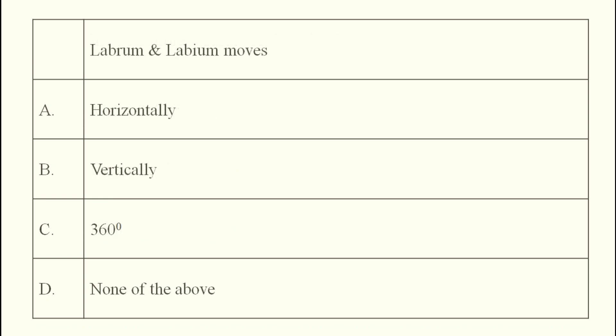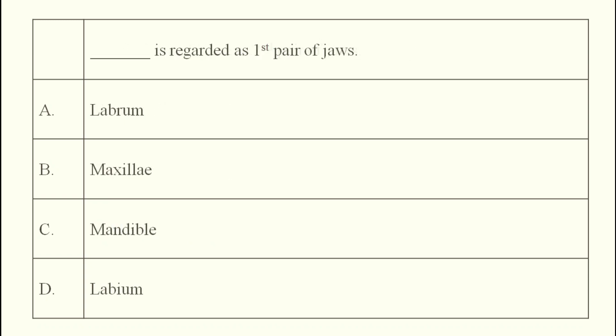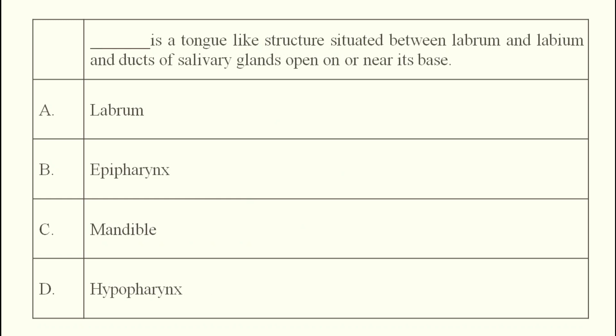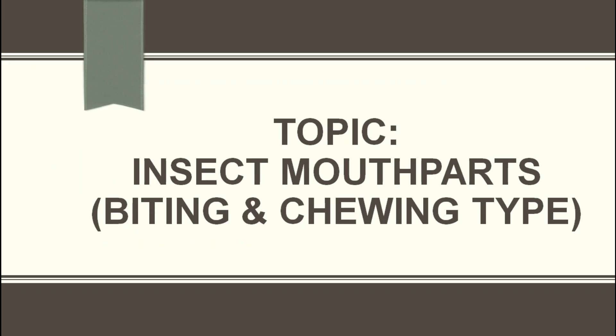These are the basic things. That is why I am not telling. Again Order Odonata, that is your dragonfly, damselfly. They are also aerial predators. So, these are the example of your biting and chewing type of mouthparts. So, I hope these things were informative for you. It will be helpful for you in different exams. Thank you for watching. Have a nice day.